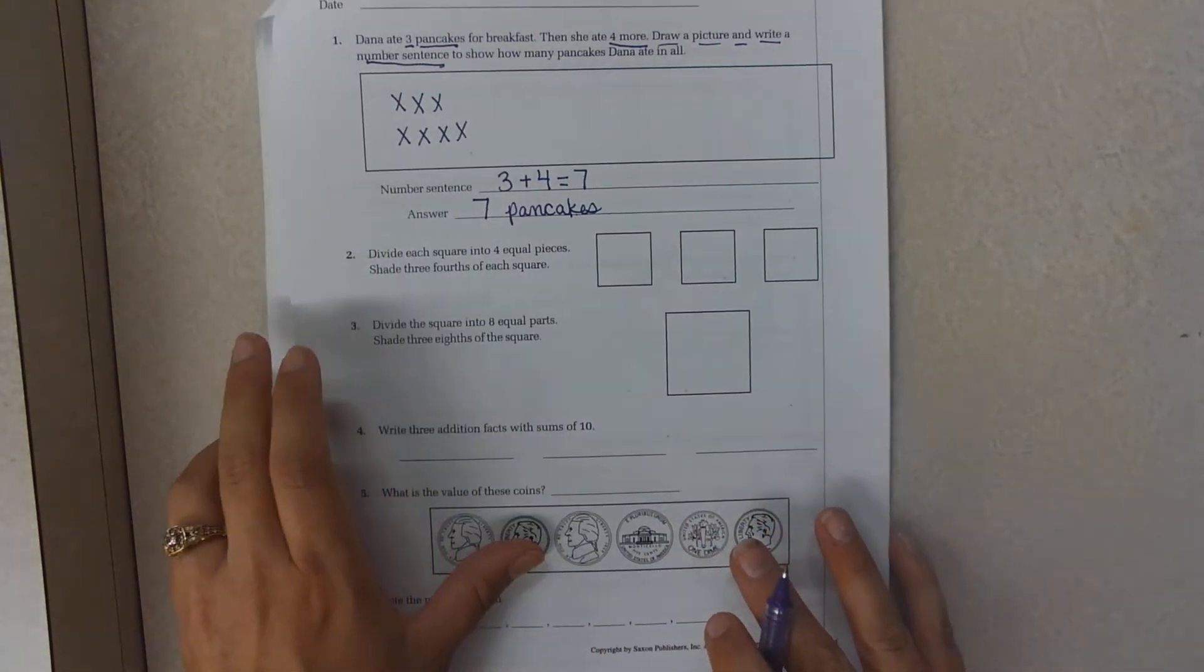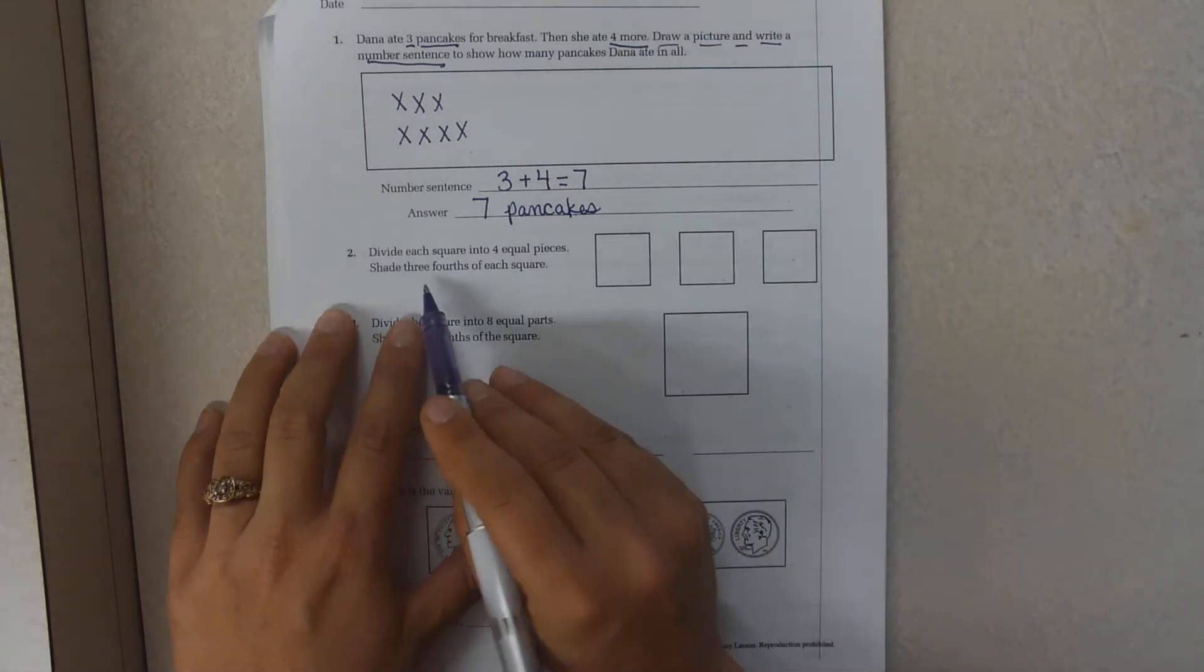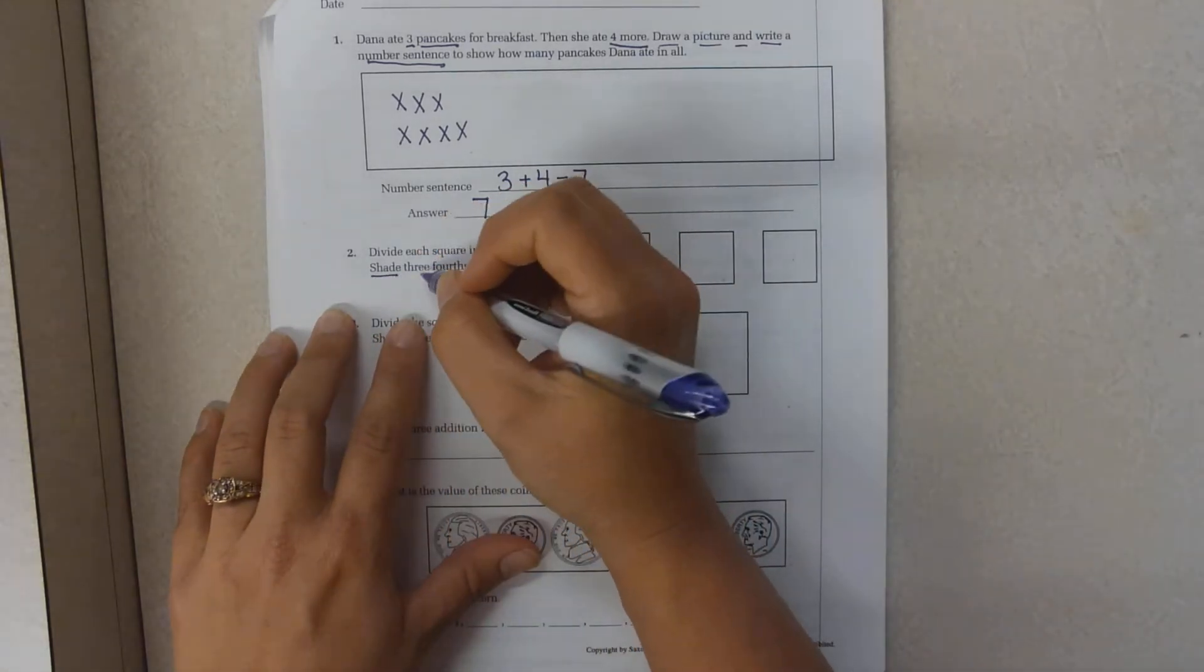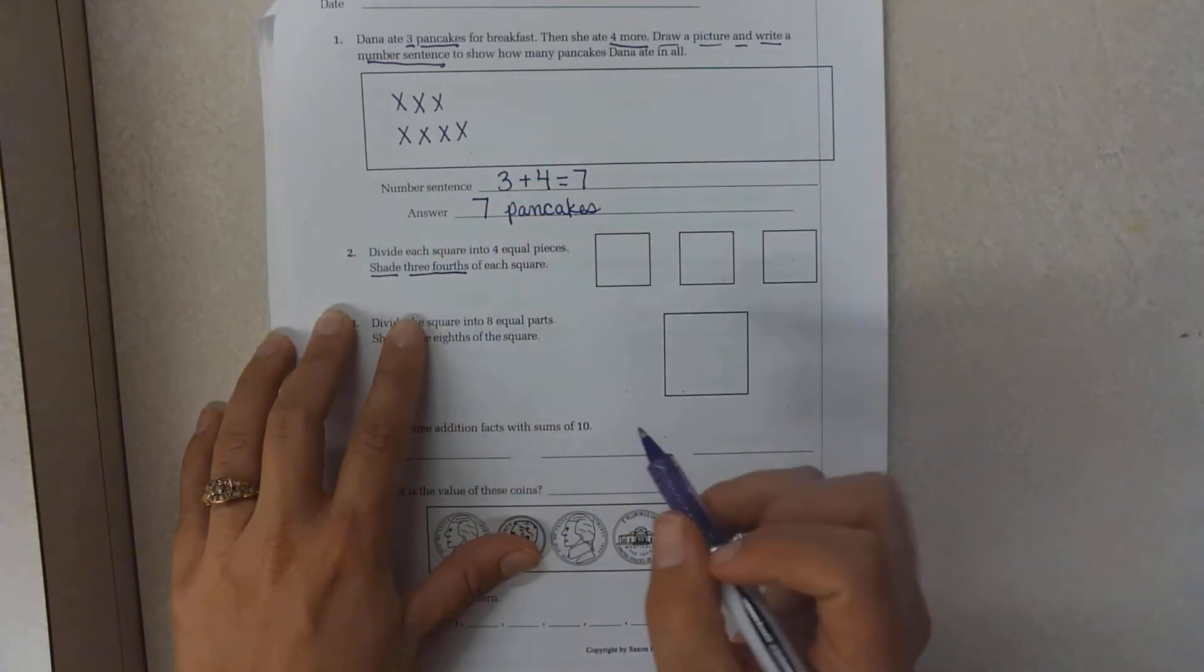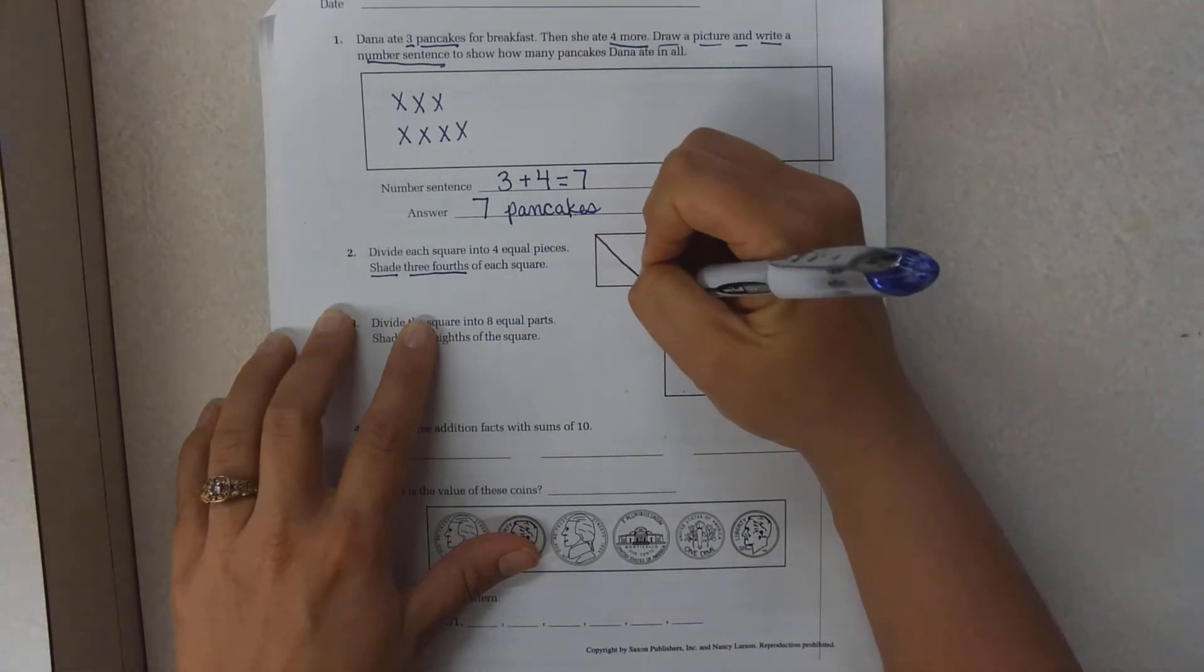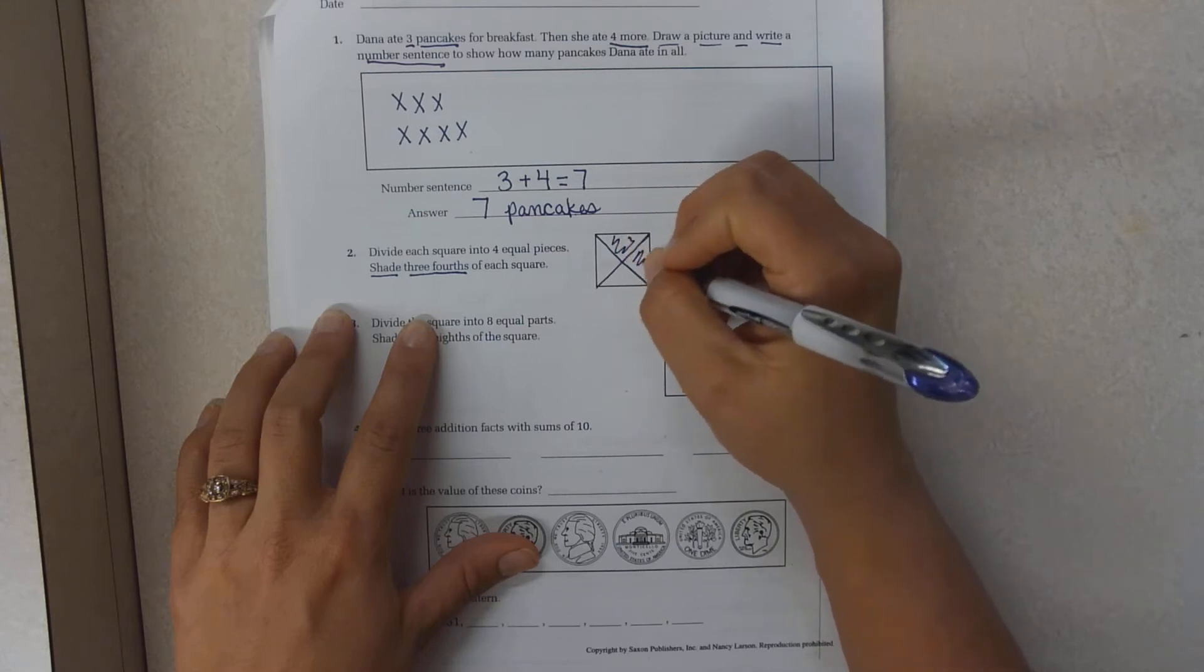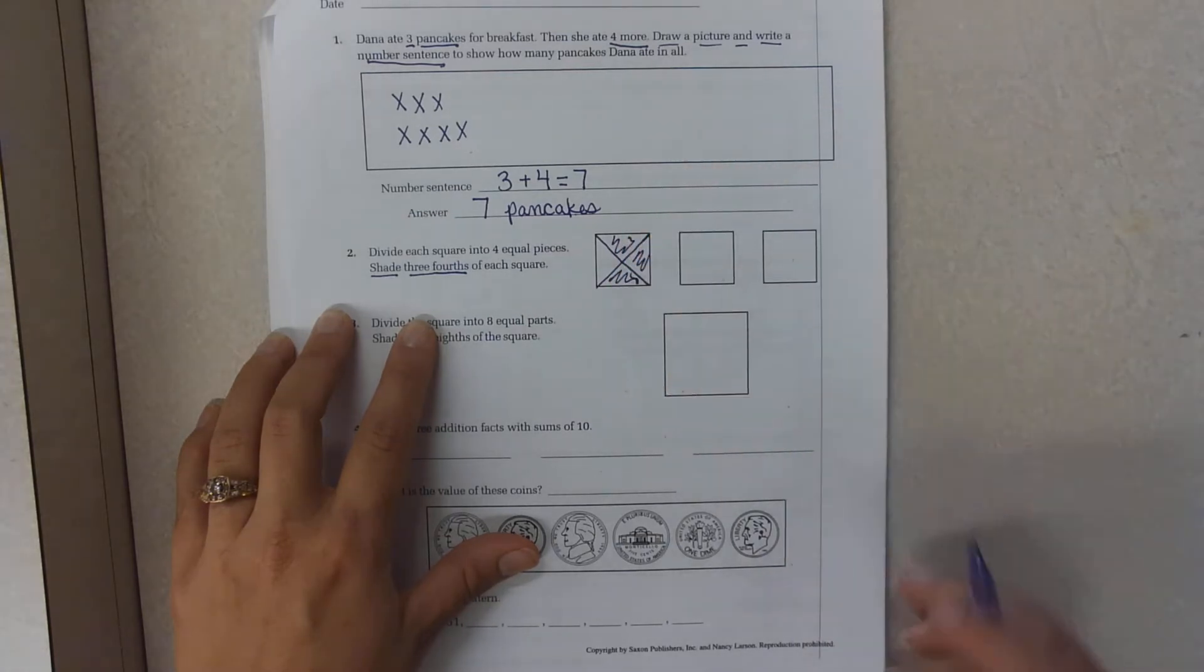Divide each square into four equal parts. Shade three. Now we're going a little harder. Shade three fourths. So I can cut it this way.